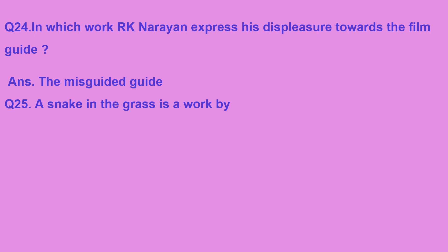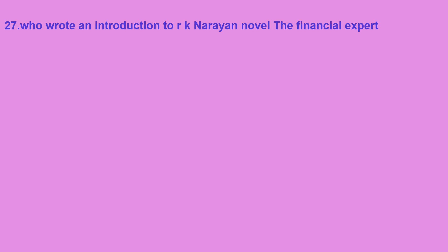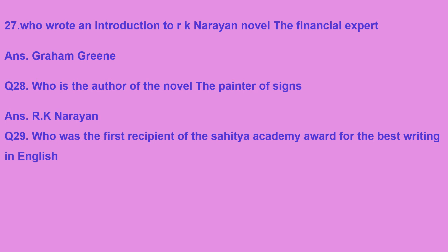A Snake in the Grass is a work by RK Narayan, published in his short stories collection An Astrologer's Day. In which novel did RK Narayan write about the biography of K.V. Jagan? K.V. Jagan is a fictional character in RK Narayan's novel The Sweet Vendor. Who wrote the introduction to RK Narayan's novel The Financial Expert? The introduction was written by Graham Greene, the mentor and friend of RK Narayan. Who is the author of the novel The Painter of Signs? RK Narayan wrote The Painter of Signs.